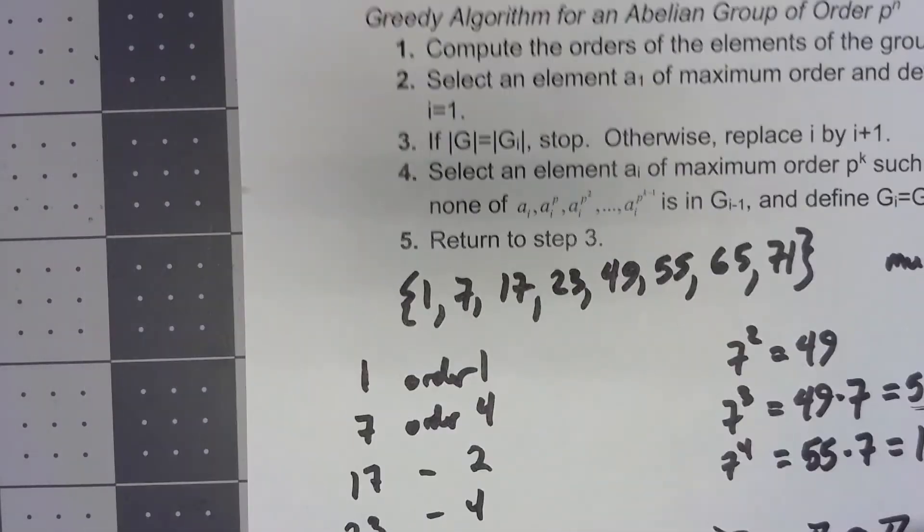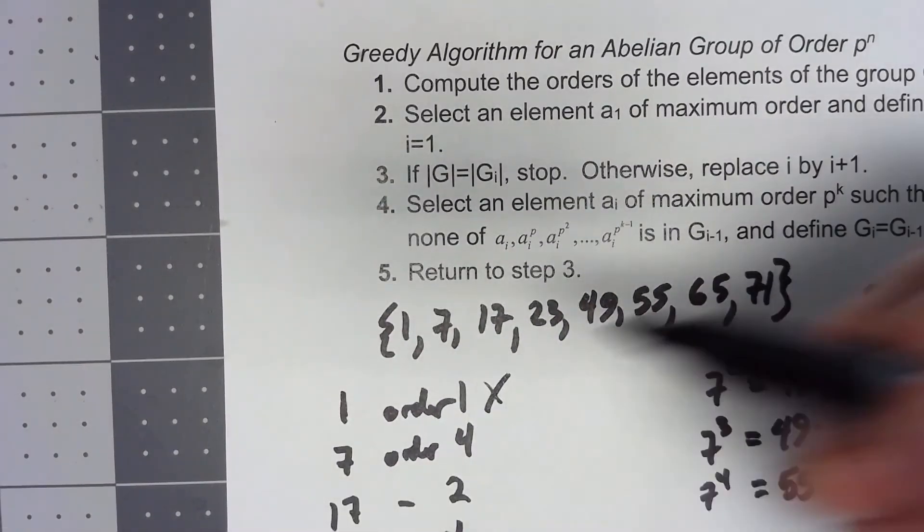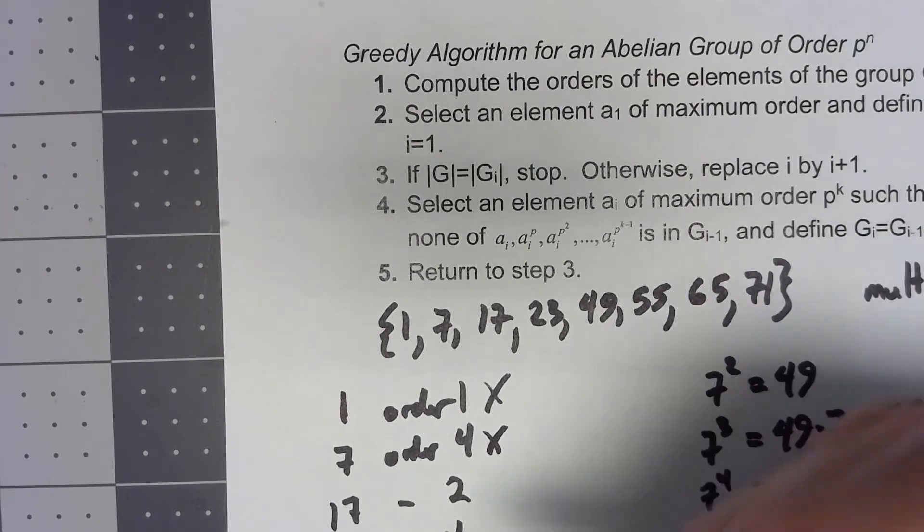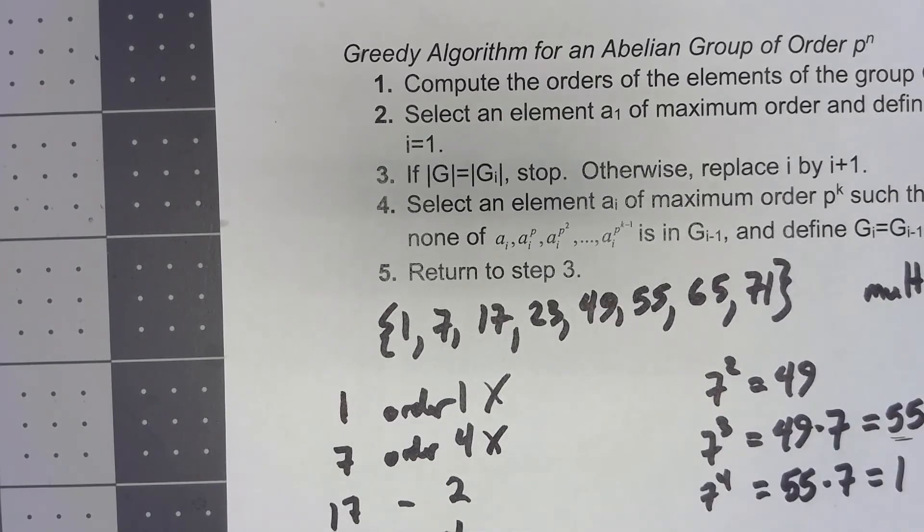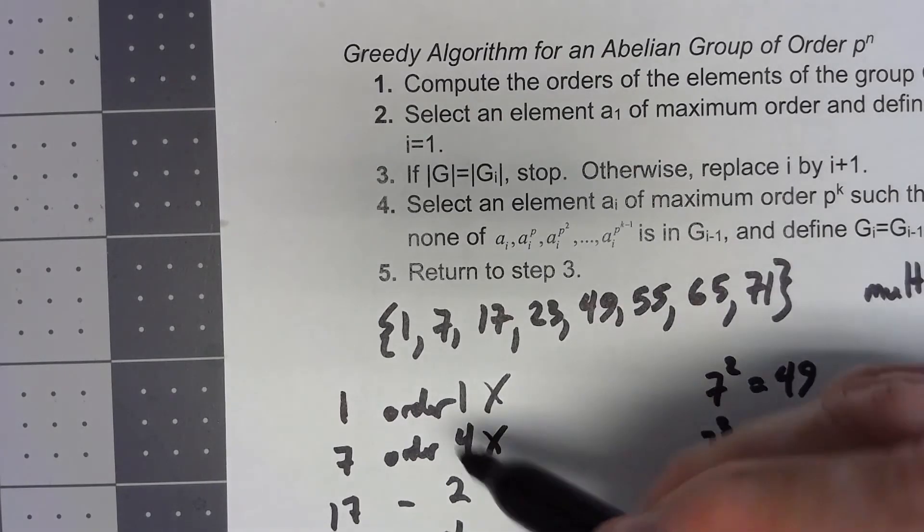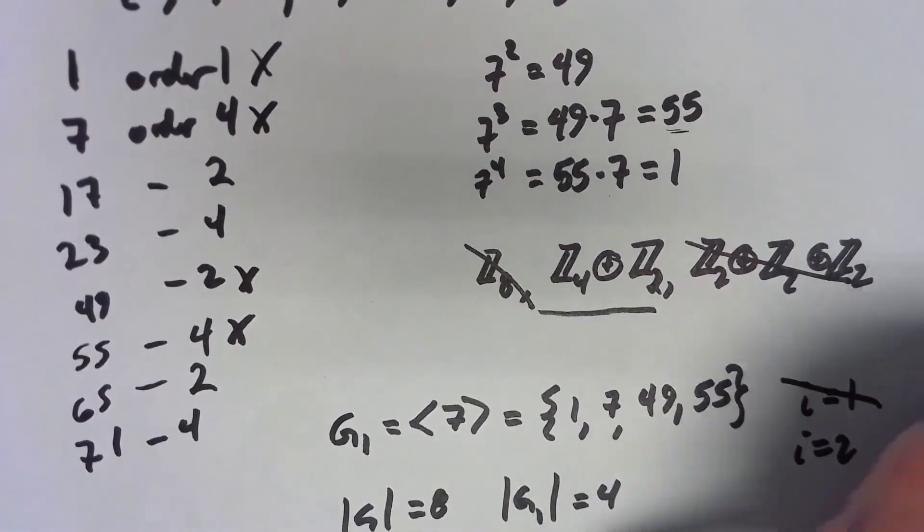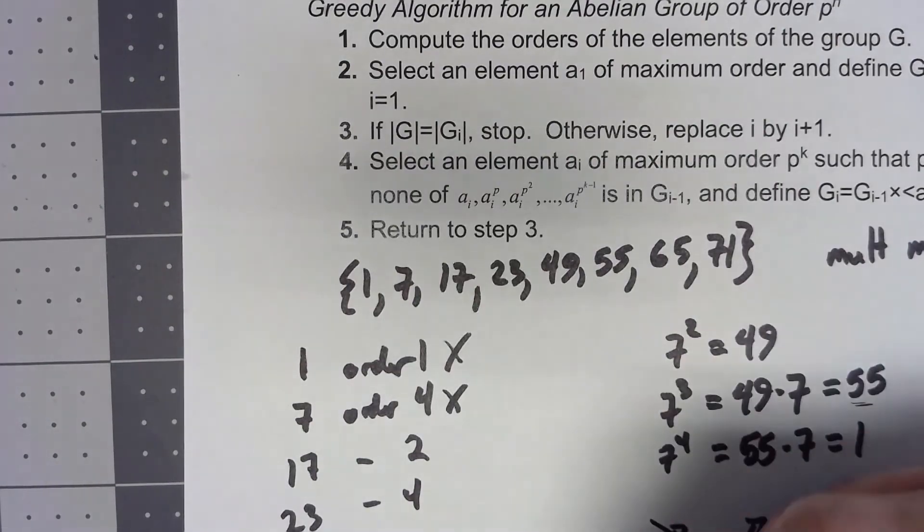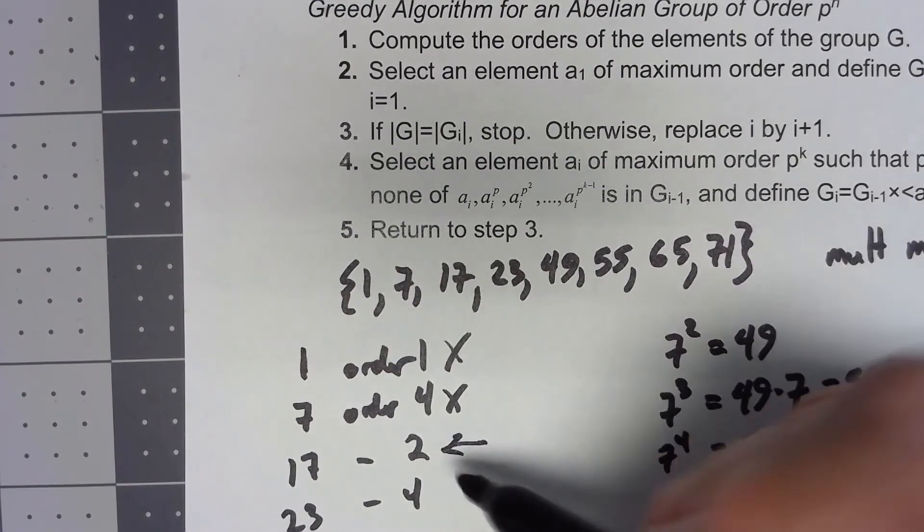So going back to my list, 1's out. It's not the right order. 7 and 49 and 55 are all out because those were all in my G1. I want something of order 2. So let's just take 17.